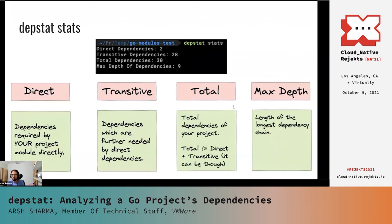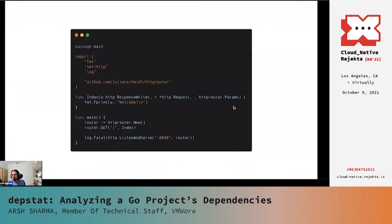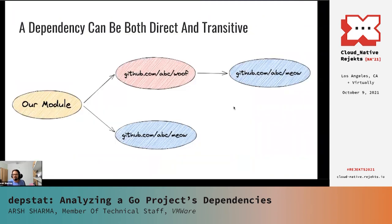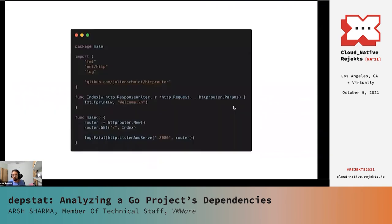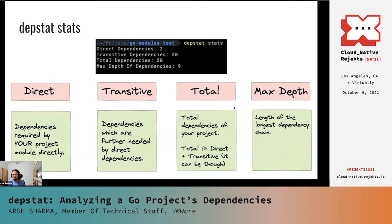The final thing in the output is the max depth of dependencies, which is nothing but the length of the longest dependency chain. There are two dependency chains: one is from our module to woof to meow, which has a length of 3, and the other is from our module to meow, which has a length of 2. So the max depth of dependencies in this case would be equal to 3. You can also run the stats subcommand with verbose mode on to see the actual chain whose length is being shown in the max depth of dependencies.